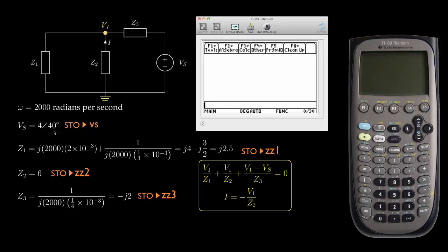So the first thing I'll do is store the source voltage phasor, which is 4 with an angle of 40 degrees, into a variable I'll call VS. So there's 4 at an angle of 40, and the units are degrees for our angles. And I'll store that into VS. Next, I'll store the impedance Z1 into the variable ZZ1. And that impedance is J. And in the TI-89, that's I square root of minus 1. We need to multiply that times 2.5. And then I'll store that into ZZ1.